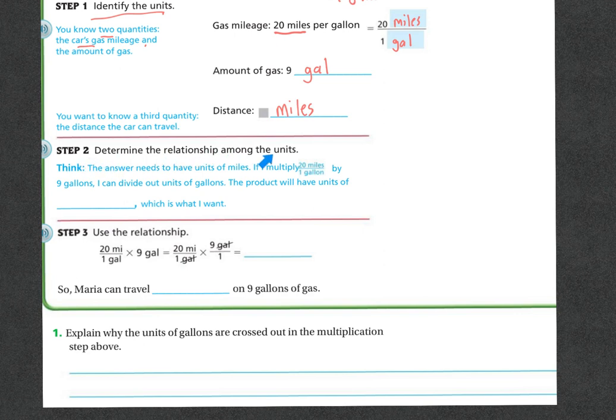So this is kind of like when we were doing unit rate. Think: the answer needs to have units of miles. If I multiply 20 miles over one gallon by nine gallons, how can I divide out the units of gallons? The product will have to be units of miles, which is what I want.